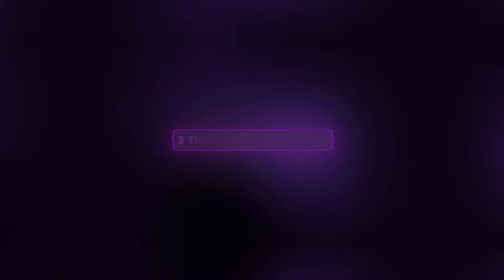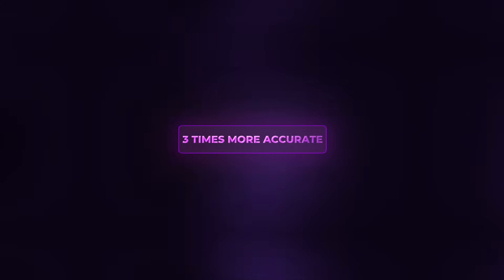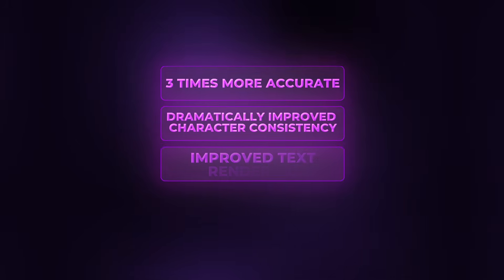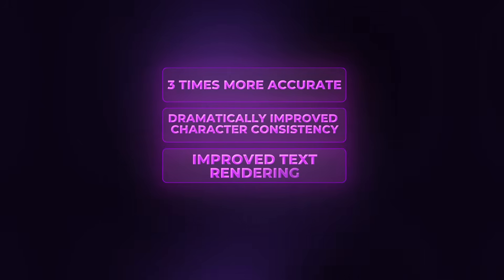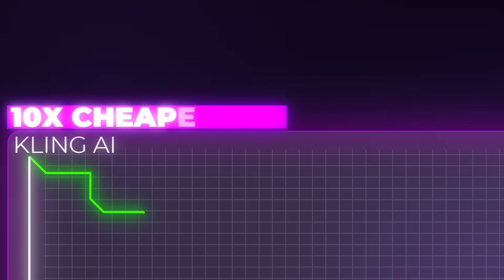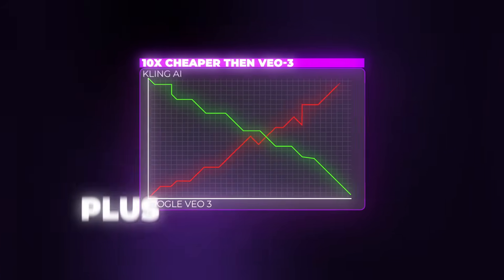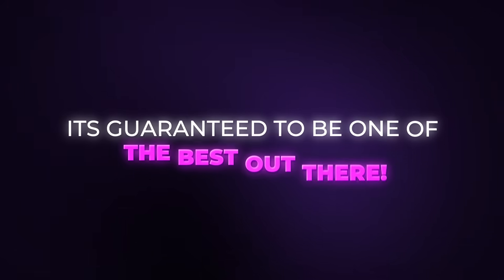What makes it so incredible is that it's three times more accurate. It dramatically improved its character consistency, has much better text rendering capabilities, and the best part is that it is 10 times cheaper than Google's VEO3. Plus, with its new photo-to-video generating software, it's guaranteed to be one of the best out there. We're going to be taking a look at it today.